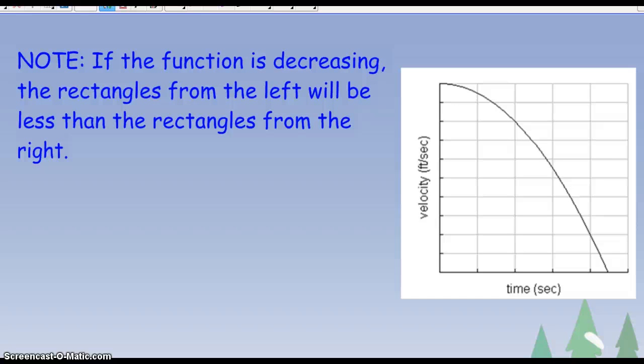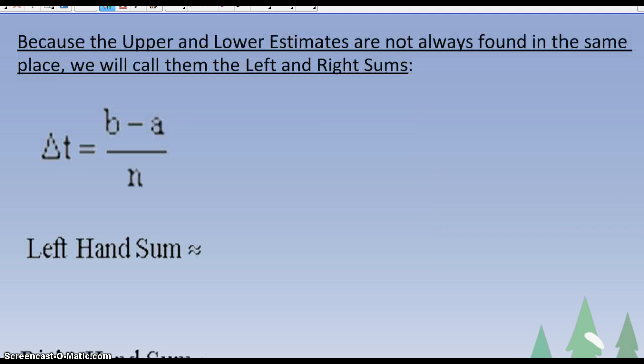Now, if the function is decreasing, the rectangles from the left are going to be less than the rectangles from the right. You want to be aware how we're talking here, that now going from the left, that would now be the overestimates. Because upper and lower is not going to be always in the same place, we tend to just make our life easier here and say that we're going to have delta t, which is b minus a over n. So a and b are the endpoints, and n is the number of intervals.